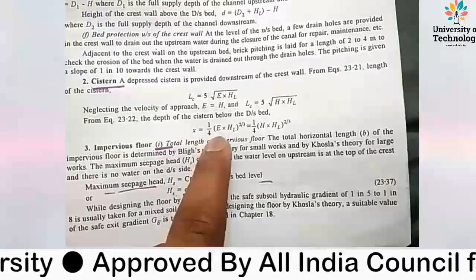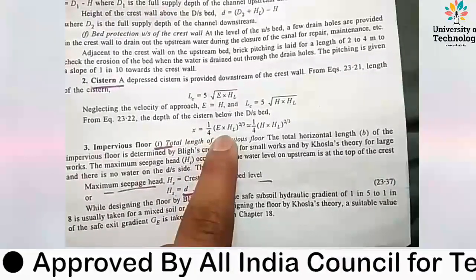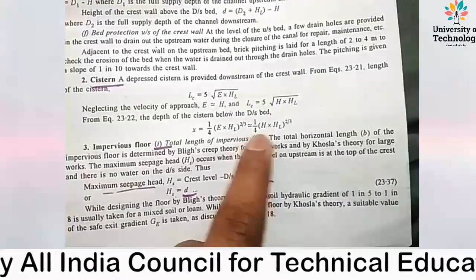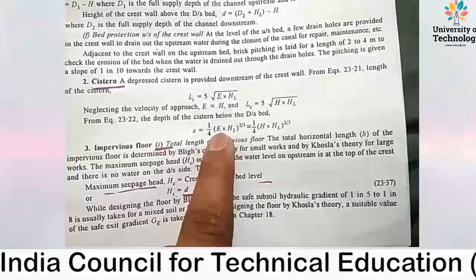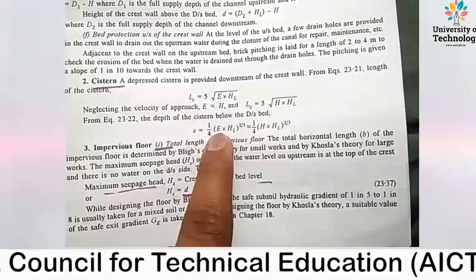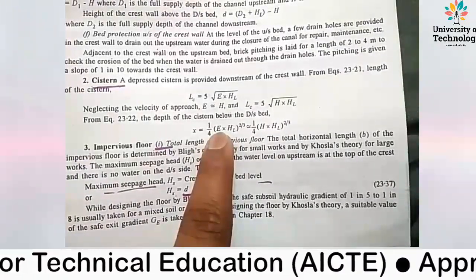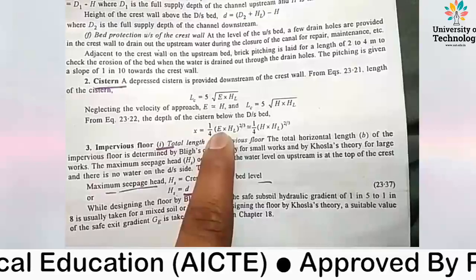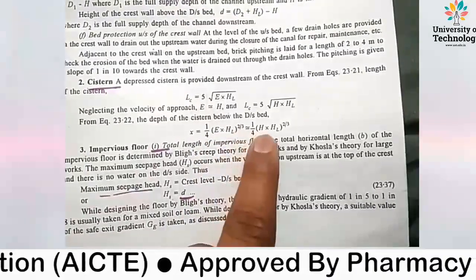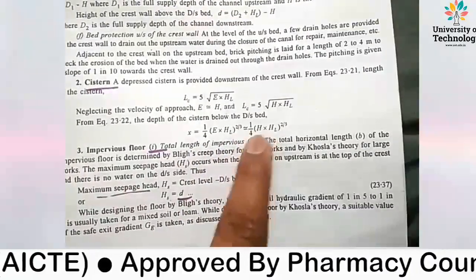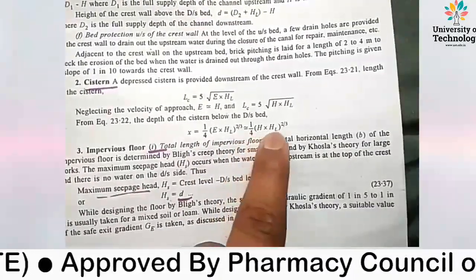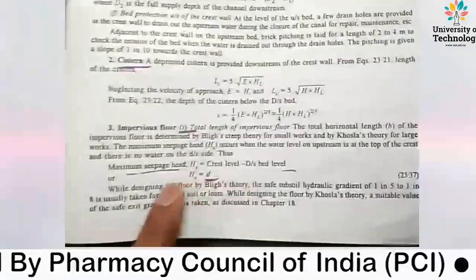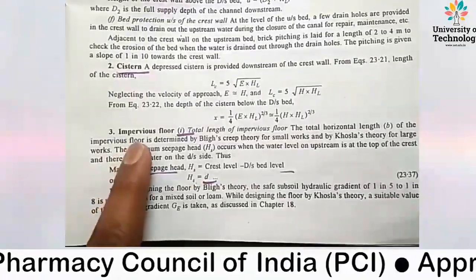So the length of the cistern equals 5 times the square root of H multiplied by HL. Similarly, the depth of the cistern is given by a corresponding formula. If we neglect the velocity of approach, E becomes capital H and it is converted into the simplified formula. The next step is the impervious floor.